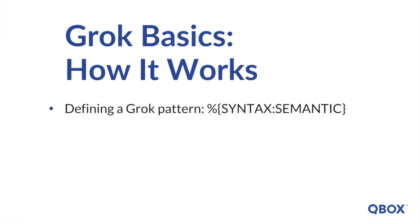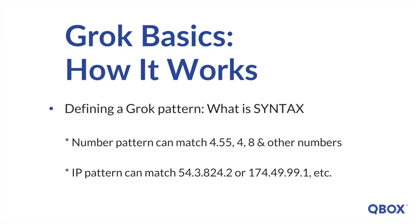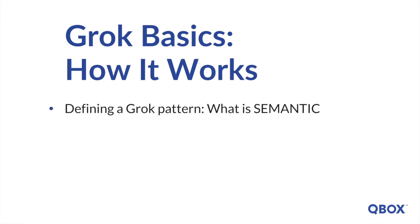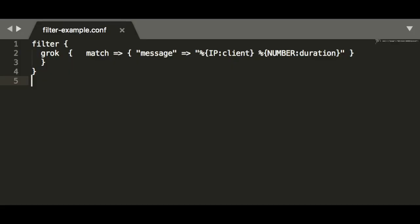Grok filter works by combining text patterns into something that matches your logs. You can tell Grok what data to search for by defining a Grok pattern with syntax and semantic. The syntax is the name of the pattern that will match your text — for example, the number pattern can match 4.55, 4, 8, and any other number, and the IP pattern can match IP addresses. The semantic is the identifier given to matched text — you can think of this as the key in the key-value pair created by the Grok filter, with the value being the text matched by the pattern. We can express this using Grok patterns such as number:duration and IP:client, then refer to them in the filter definition.